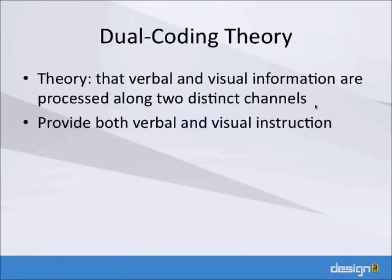The dual coding theory is the theory that you get information on two different channels — a visual channel and a verbal channel — and they're processed in parallel. Not only are they processed in parallel, but you actually understand information better if you get it on both channels at the same time. If I give you information verbally, it might not stick as well as when you also have visual information in front of you. The way to accommodate this is to make sure you have something visual as you're instructing verbally.